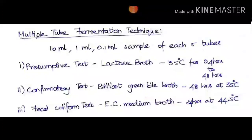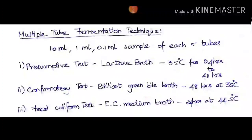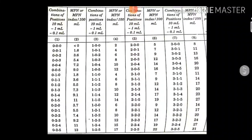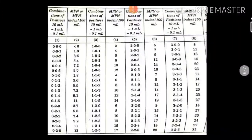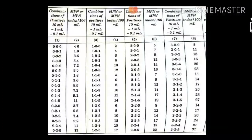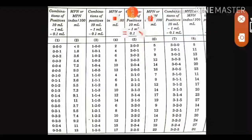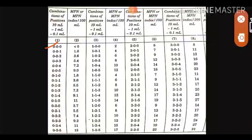Totally we have 15 tubes in each 10, 1, and 0.1 ml. Check how many tubes have positive results for each dilution. This is the MPN index value table. Based on combinations of positive results, you can directly get the MPN value.